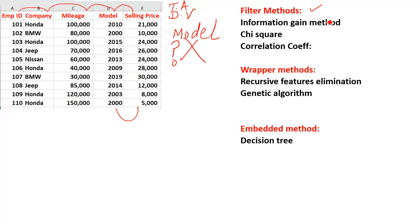First method is called filter methods, wrapper methods, and embedded method. In filter methods we have information gain method, chi-square, and correlation coefficient. These methods we had discussed in statistics, but quickly I will explain that in filter method we will see the correlation between the feature independent variable and the target variable.